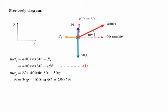In the upwards direction, the two forces are the normal reaction force and the 400 sin 30 degrees force—the component of the 400 newton force. Going downwards, we have the weight.